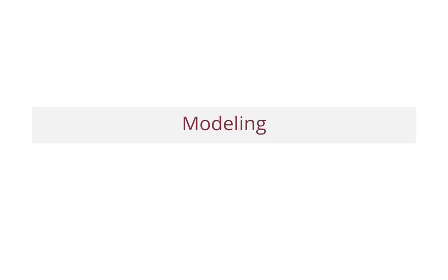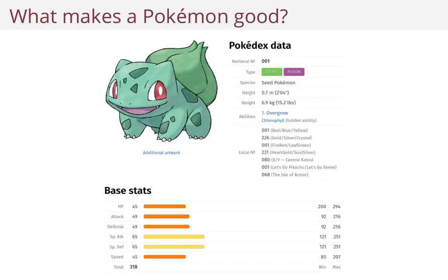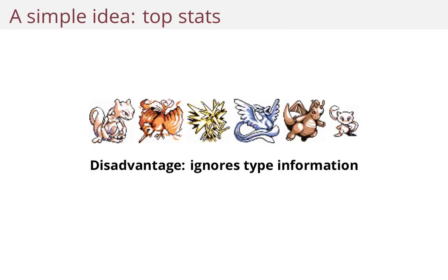Let's get started by talking about modeling. So what makes a Pokemon good? Well, a Pokemon has types. For instance, Bulbasaur here is of type Grass and Poison. And a Pokemon has some base stats, and the most interesting thing might be the total stats, which is 318 for Bulbasaur. We could just look at total stats, get six Pokemon with the highest stats, and claim that this is the best party. It's certainly not a bad party — each of these Pokemon are on an individual level really good — but they don't complement each other nicely, and they don't use any type information.